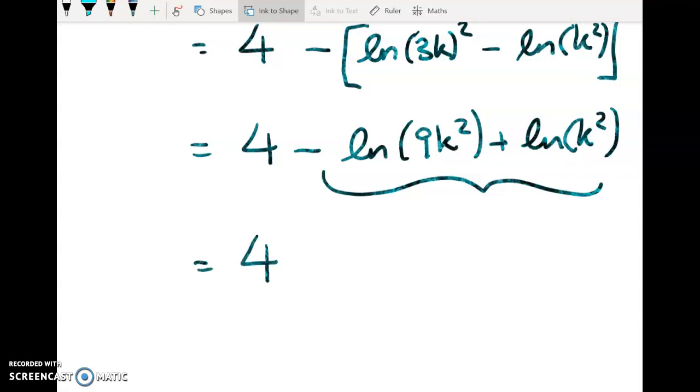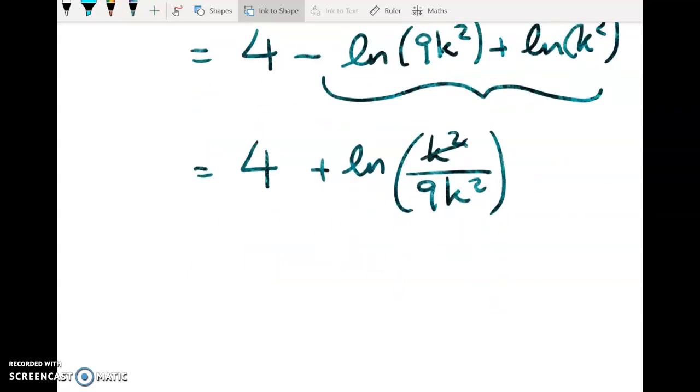So we have 4 plus the natural log of k squared over 9k squared. And we know that k is non-zero. So we're left with 4 plus the natural log of 1 ninth.